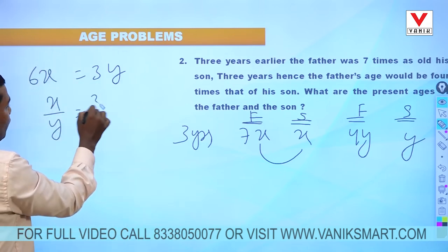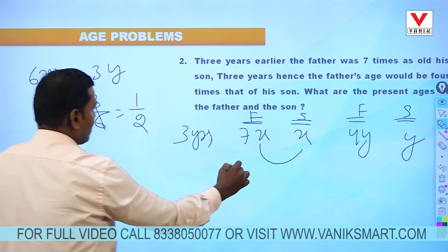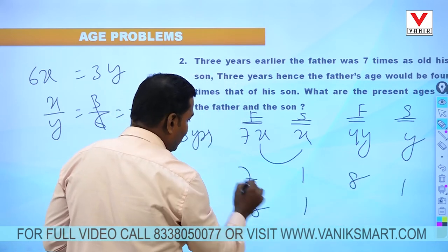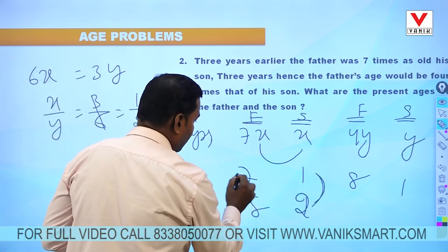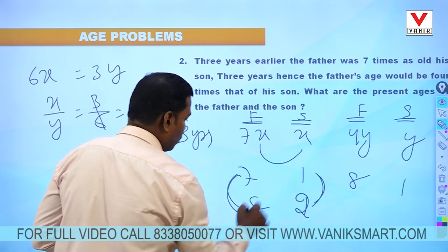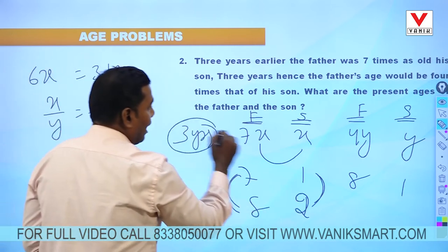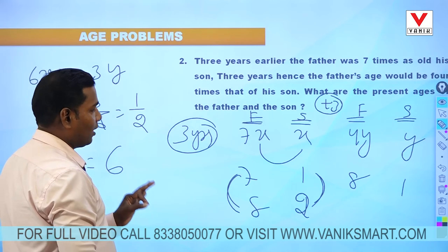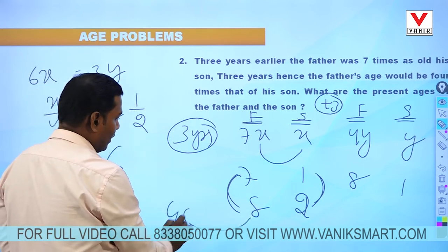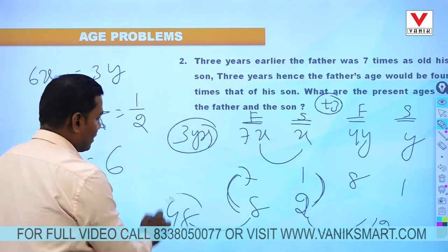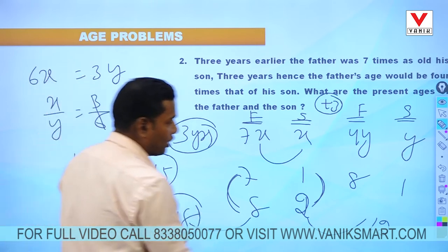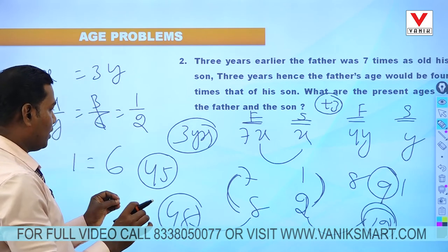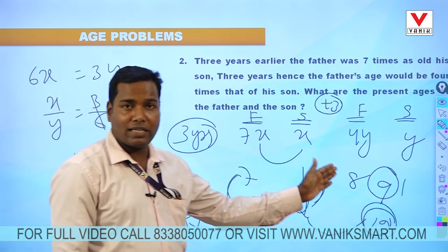So x by y equals 1 by 2. With x equals 1, 7x is 7 and son is 1. With y equals 2, 4y is 8 and son is 2. The difference between 7 and 8 is 1, which equals 3 years before plus 3 years after, totaling 6 years. So 1 equals 6. After 3 years father's age is 48 and son's age is 12, meaning present father's age is 45 and son's age is 9.